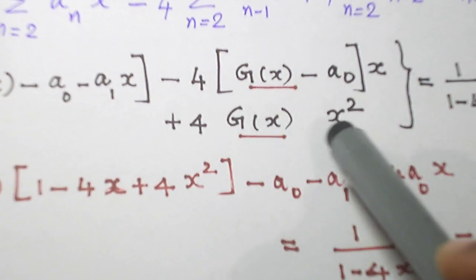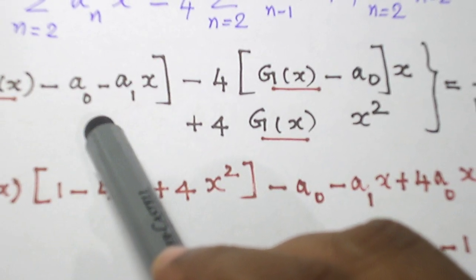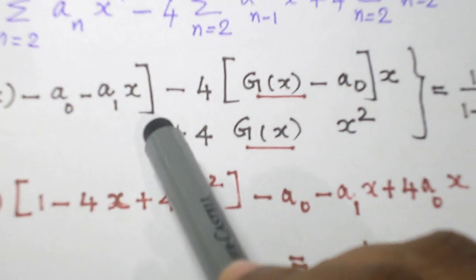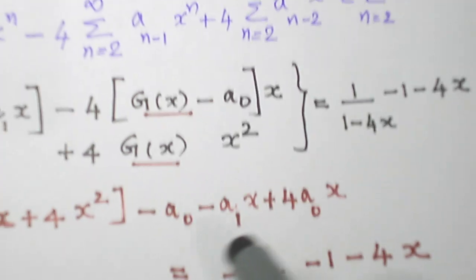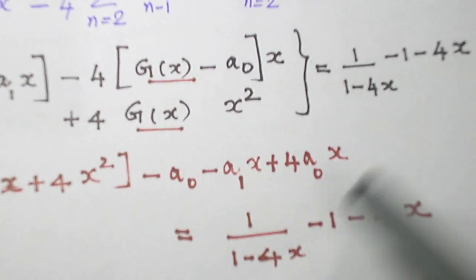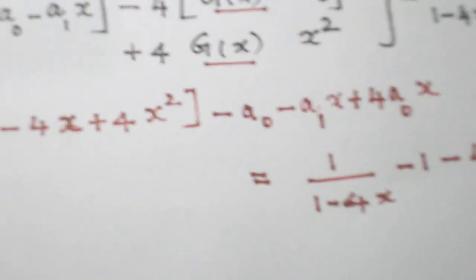Plus 4 into x^2 multiplied and come here. And the rest of the term I write it separately. Minus a_0 minus a_1 x plus 4a_0 x. And this is equal to 1/(1-4x) minus 1 minus 4x.